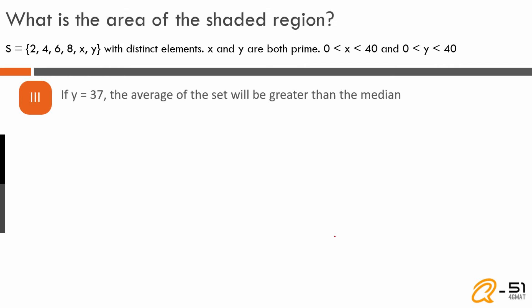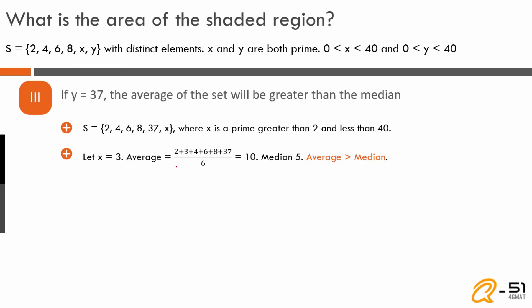Statement 3: if y=37, the average of the set will be greater than the median. The set becomes 2, 4, 6, 8, 37, and x, where x is a prime greater than 2 and less than 37. Starting with x=3, the ascending order is 2, 3, 4, 6, 8, 37. The average is (2+3+4+6+8+37)/6 = 60/6 = 10. The median is (4+6)/2 = 5. Average 10 > median 5: true.